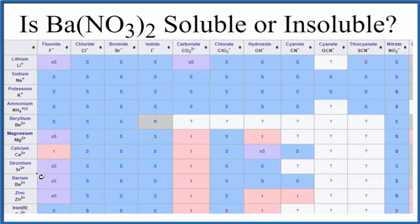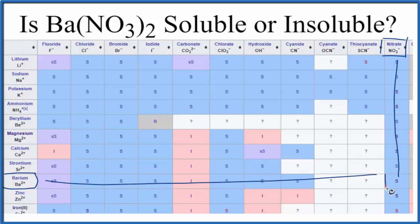We go down, here's barium, these are all here on the left, the positive ions, the Ba2+. And then we're going, here's the nitrate way over here, NO3-. So we'll go down, and then across, and right here we see S. That means it's soluble in water.